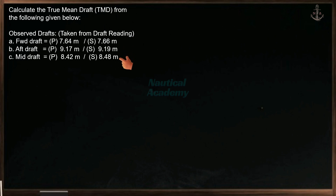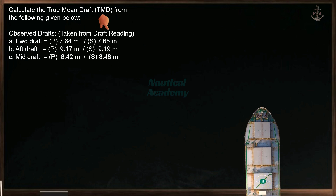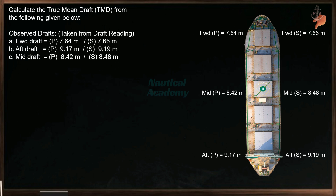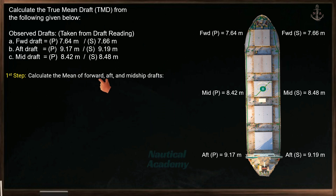The drafts provided in this scenario are observed drafts, meaning they were recorded during an actual draft reading. If you are not familiar with how to read draft marks, there is a separate video explaining the process — check the link in the description below. In this case, the observed drafts differ slightly on both sides, with the starboard drafts being slightly greater than the port drafts. The first step is to determine the average of port and starboard drafts by calculating the mean of forward, aft, and midship drafts using this formula.